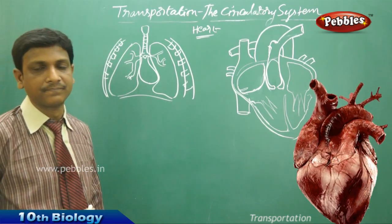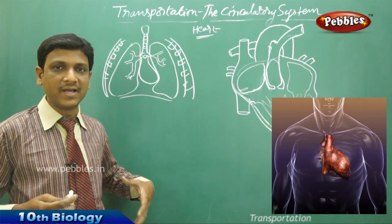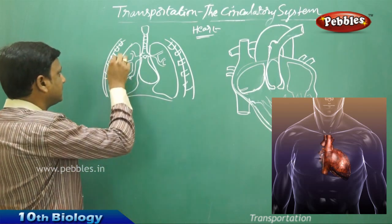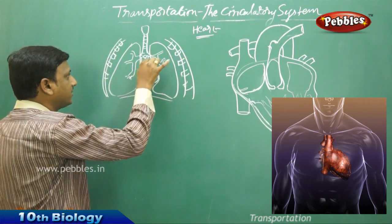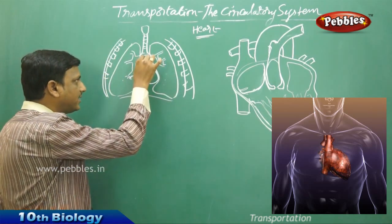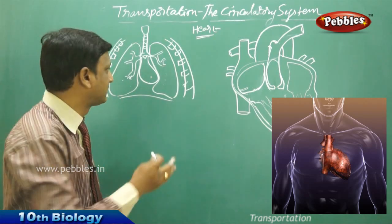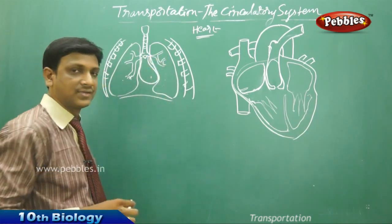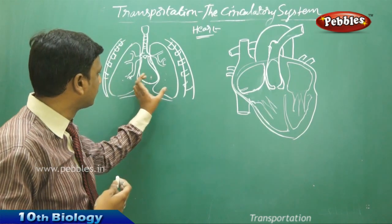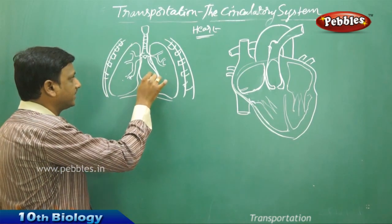Where is the heart located? The heart is located in the chest cavity. In the trunk we have two cavities: the abdominal cavity and the thoracic or chest cavity. The heart is located in the chest cavity, between the lungs. It is embedded between the lungs, slightly towards the left side. The right lung is much bigger compared to the left lung because it gives some space to accommodate the heart.